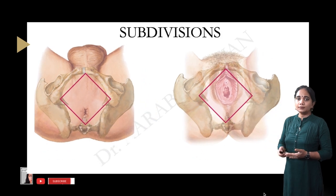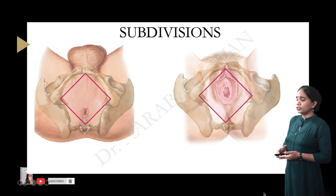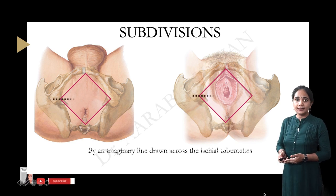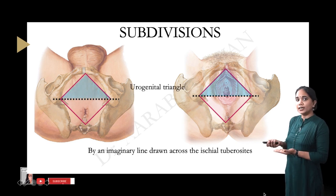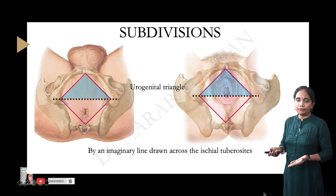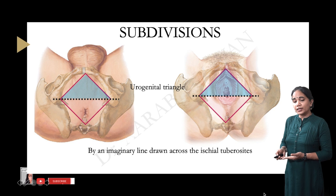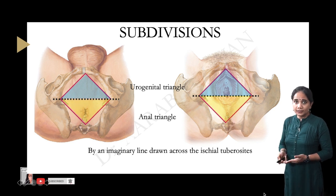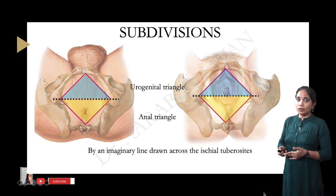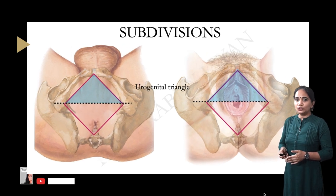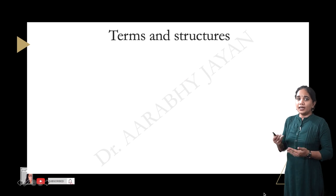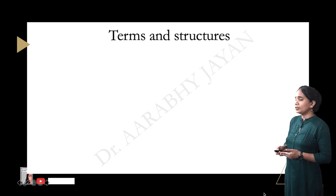To subdivide the perineum, we draw an imaginary line across the two ischial tuberosities, dividing the perineum into an upper triangle and a lower triangle. The upper triangle is called the urogenital triangle and the lower triangle is called the anal triangle. Today's topic — the perineal pouches — are dealt with in the urogenital triangle. In the anal triangle we have the anal canal and the ischiorectal fossae on either side, which is a topic for another day.